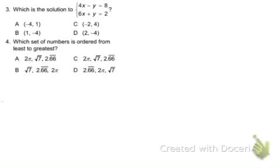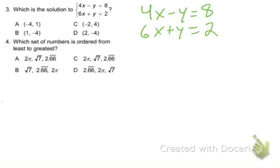Module 16 study guide problems 3 and 4. Which is the solution? So you should have rewritten that: 4x minus y equals 8 and 6x plus y equals 2.